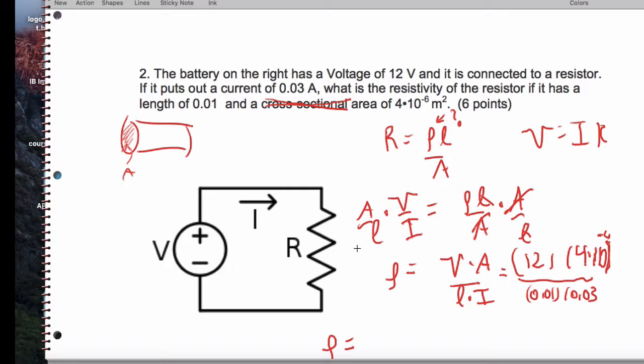We're going to have 12 times 4 times 10 to the negative 6th, divided by 0.01 and divided by 0.03. And that's going to give me 0.16, and the units are actually ohms per meter.